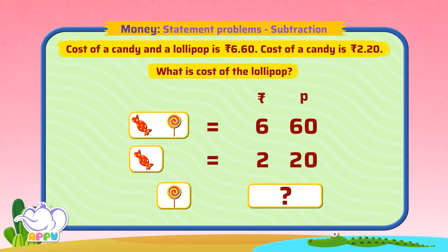To find the cost of the lollipop, we subtract the cost of candy from the total amount. 6 rupees 60 paise minus 2 rupees 20 paise.